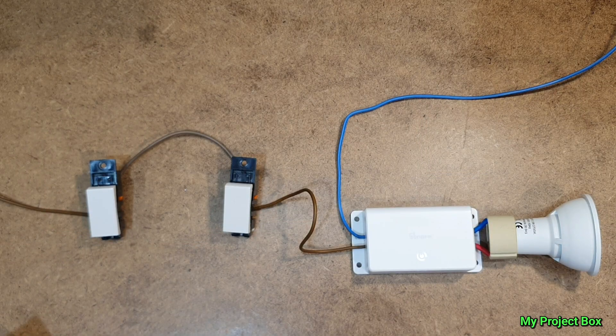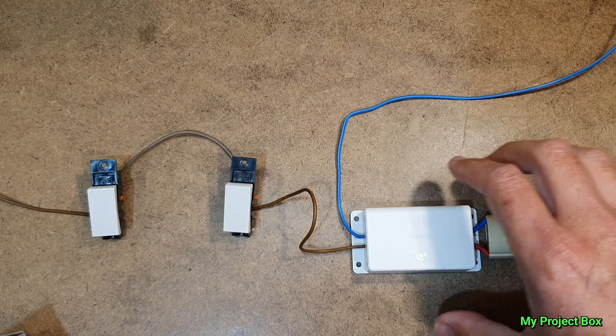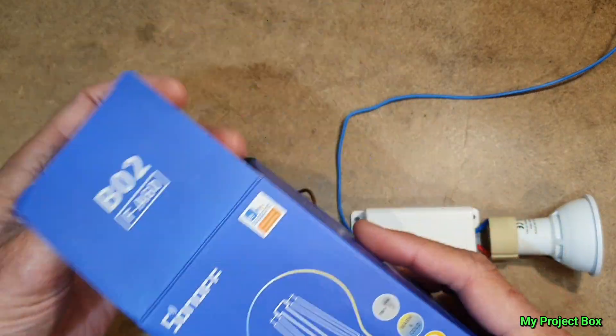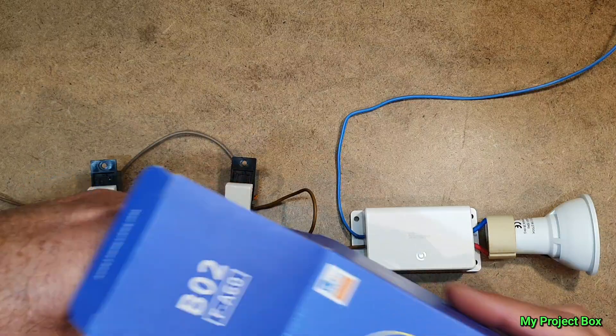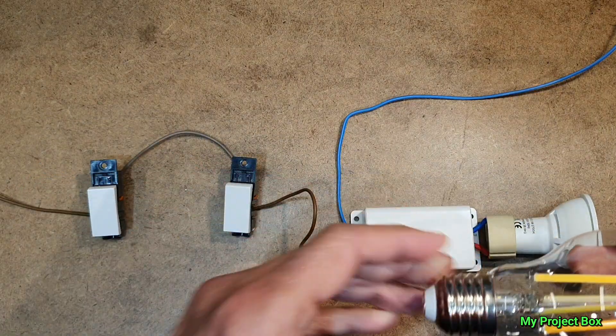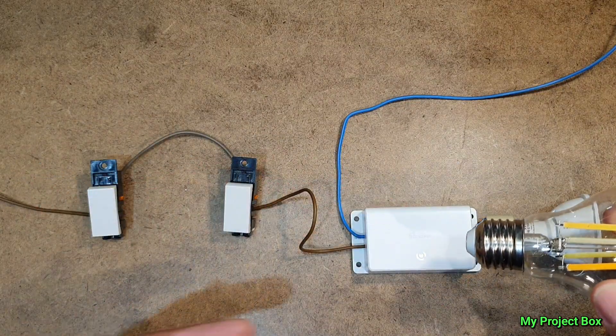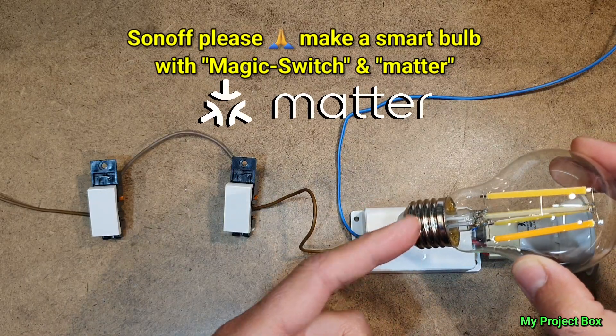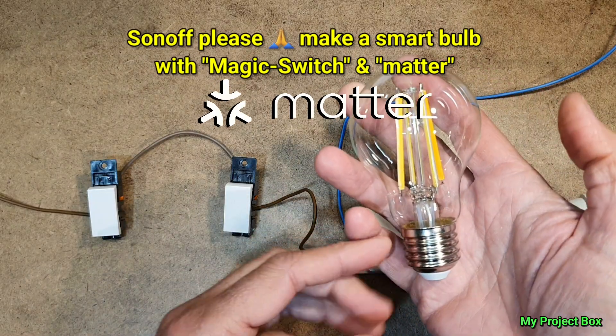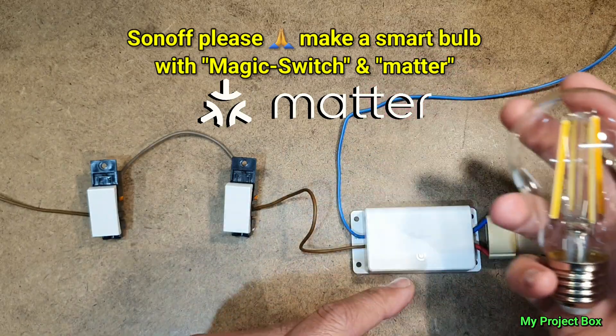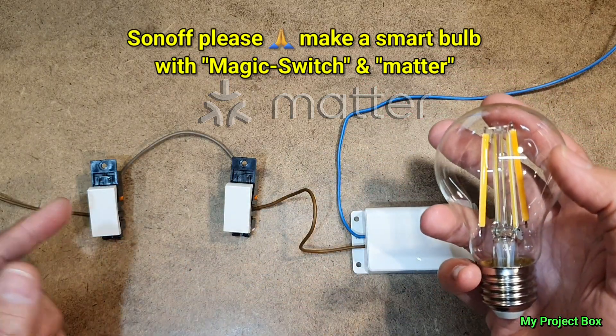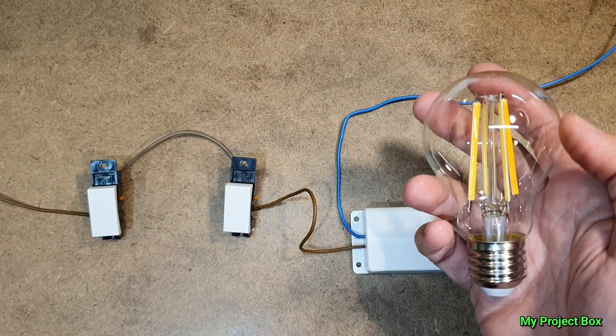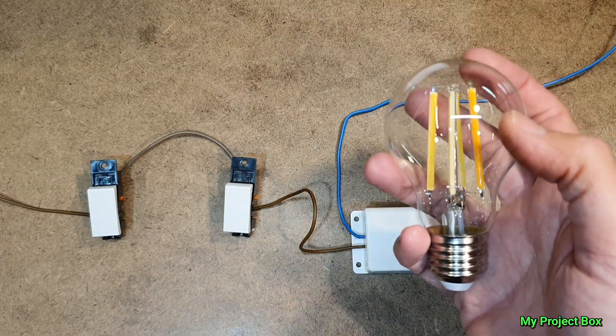Now one thing that would be truly awesome if Sonoff incorporated this Magic Switch into one of their smart bulbs. I mean how nice would it be to have normal light switches that can operate a smart bulb directly because it has Magic Switch inside. So Sonoff, if you're listening, make a smart bulb with Magic Switch inside so we can use our standard light switches to trigger a smart bulb directly. That'd be awesome.